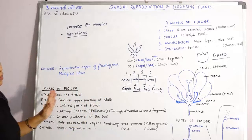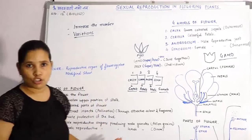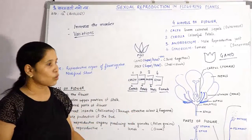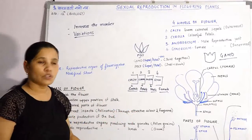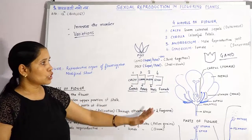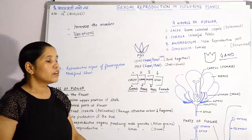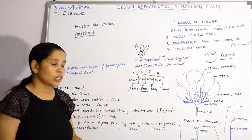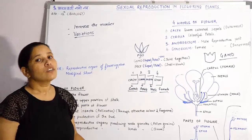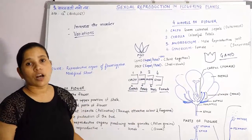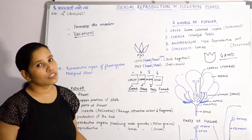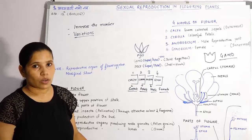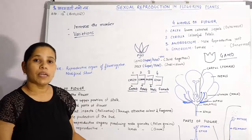Today we learned about the basic structure of the flower — a brief introduction to flowers and their structures. In the next lecture we will study about fertilization — how the process of fertilization occurs in flowering plants and what are the main events.